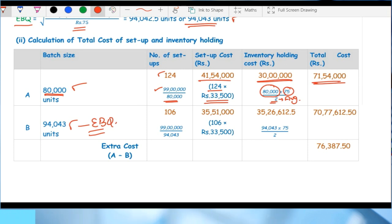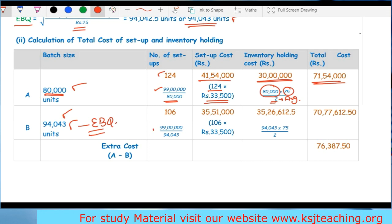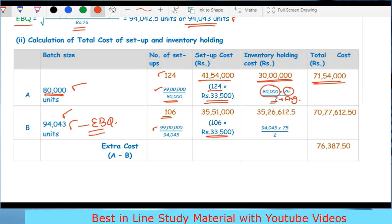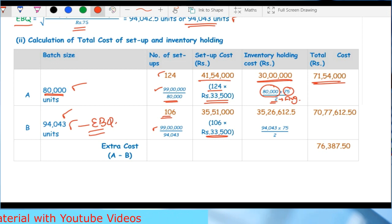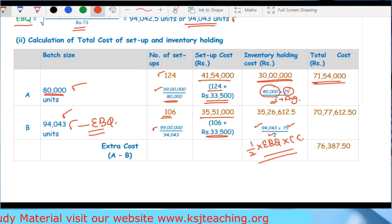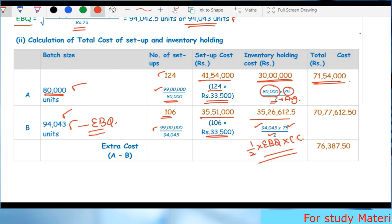Now for EBQ of 94,043 units: number of setups equals 106 batches. Setup cost is 106 times Rs 33,500 equals Rs 35,51,000. Average inventory is 94,043 divided by 2 times Rs 75. Total cost if we manufacture according to EBQ is Rs 70,77,612.50.